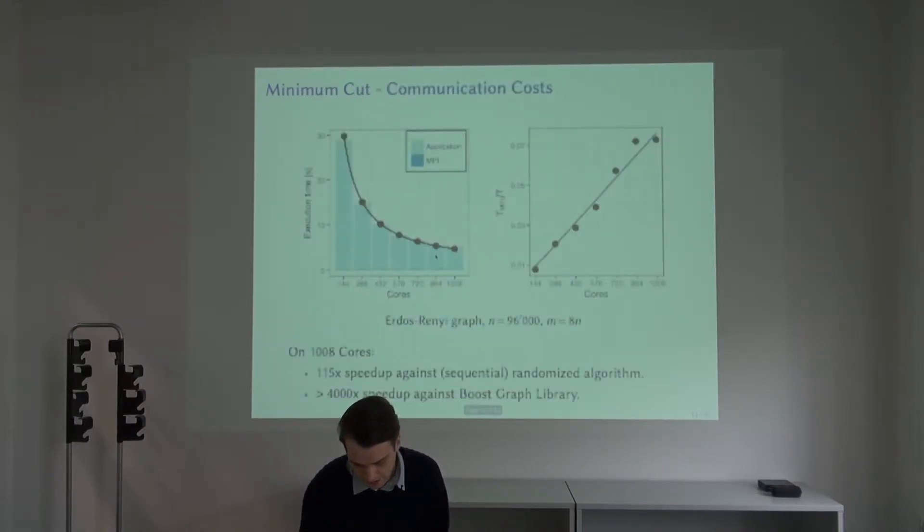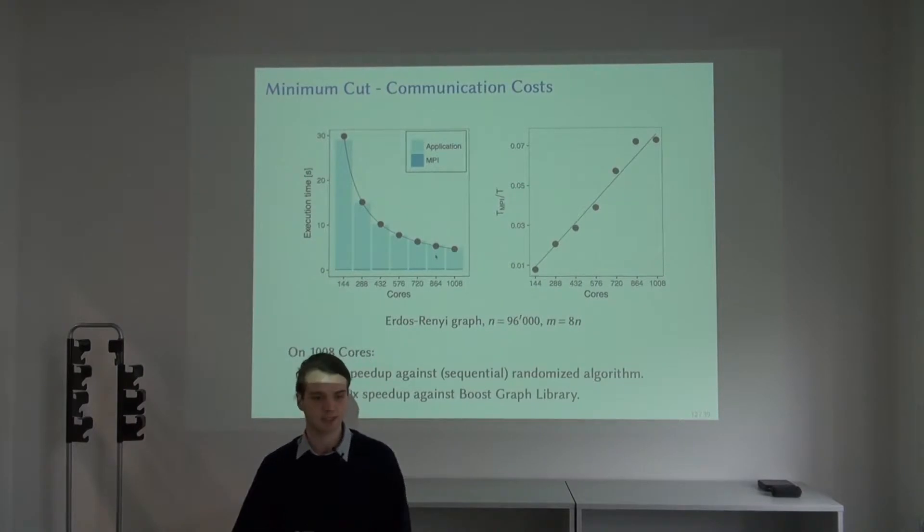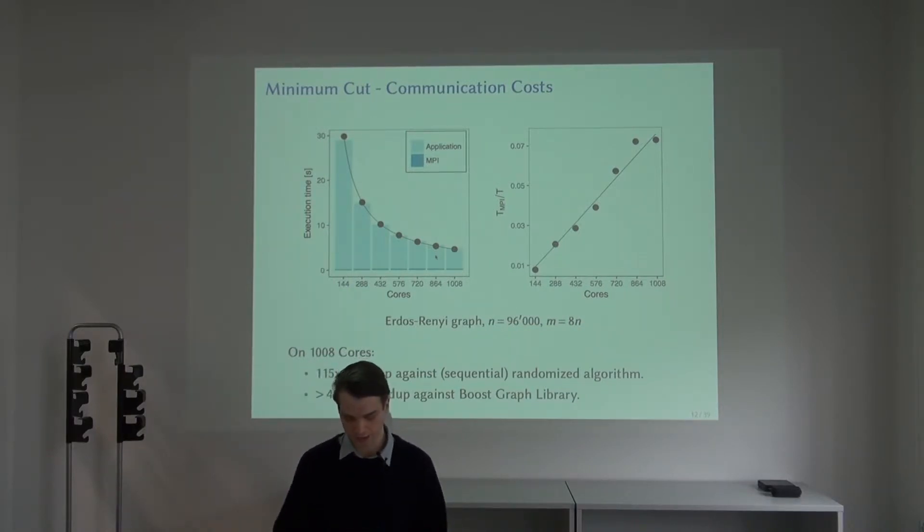For our experiments we implemented the algorithm using the message passing interface and measured its performance on Piz Daint. We measured the fraction of time spent in MPI compared to the overall time. On the left you see the running times, and on the right you can see the fraction of time spent in MPI is indeed low, ranging between one percent and seven percent on a thousand cores. This is on a sparse graph.